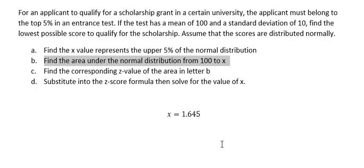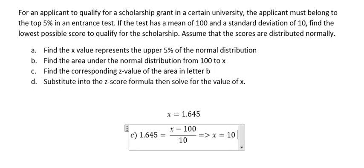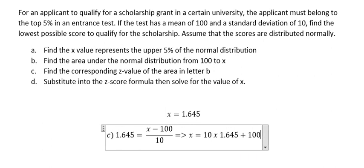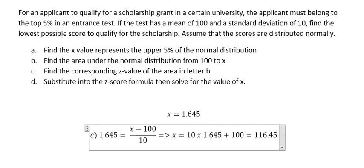And now, we need to calculate the value of the x based on the z score in here. We will substitute into the z-score formula: z = 1.645 = (x - 100) / 10, so x = 10 × 1.645 + 100 = 116.45. And this is the minimum score to get in the top 5% in here.